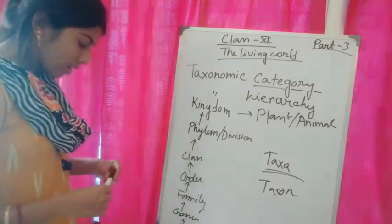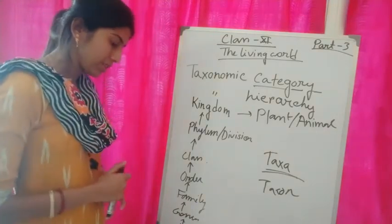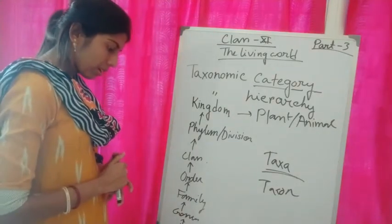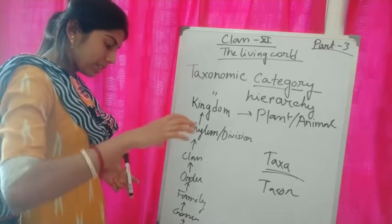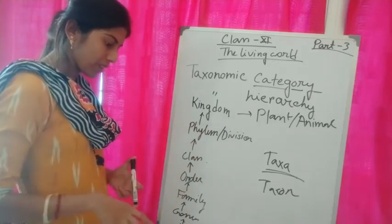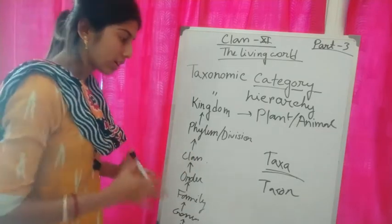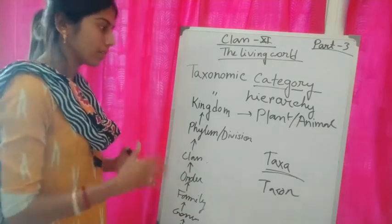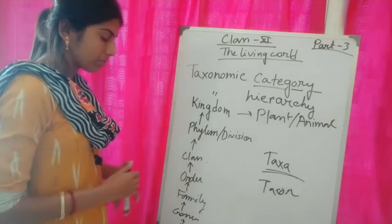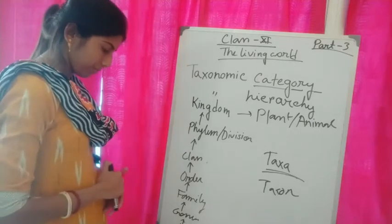For example, insects are having some common features like three pairs of jointed legs. Because of these common features, they are classified or categorized into a given rank or category. Similarly, all organisms are categorized and provided with a particular taxon and particular category.